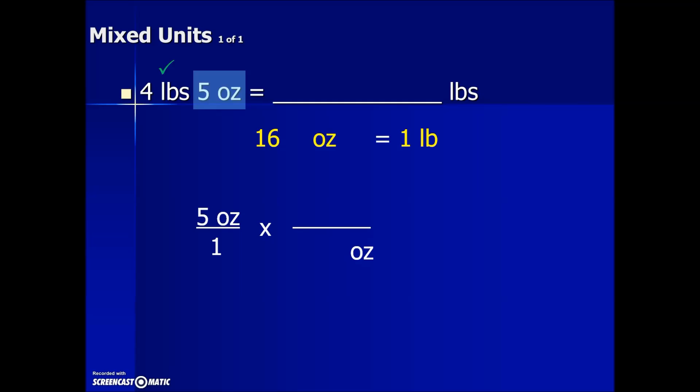When we look up the relationship, we find that 16 ounces is equivalent to one pound. The 16 ounces goes in the denominator with the equivalent one pound in the numerator. There we have our fraction value equivalent to one.